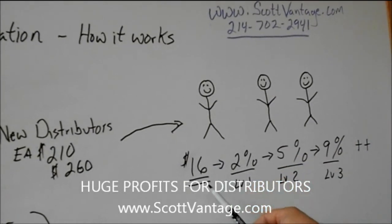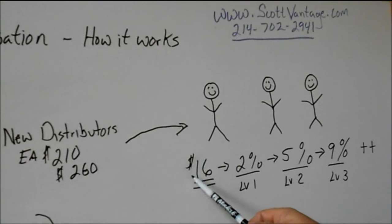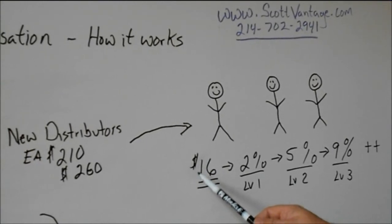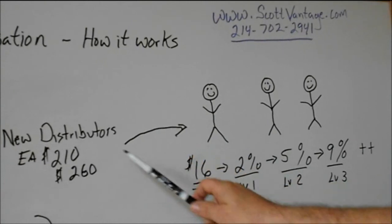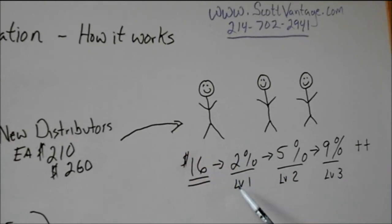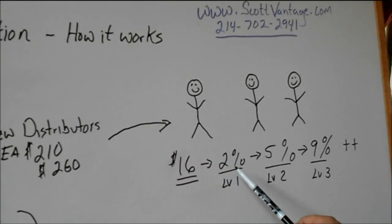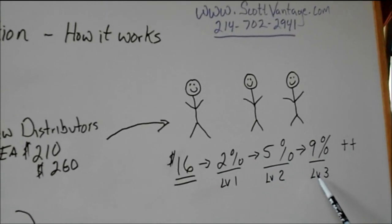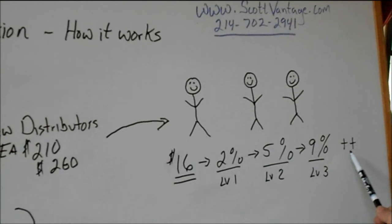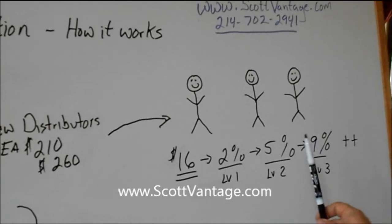On each one of their sales, you'll make $16 off of the first sale of any new distributor that signs up in your organization. After that, at level one you'll make 2% off of all their sales, at level two you'll make 5%, level three you'll make 9%, and it just builds from there as you go up in levels.